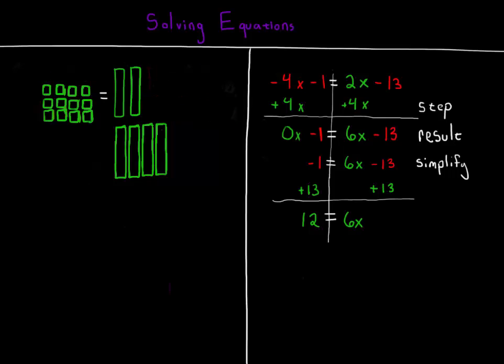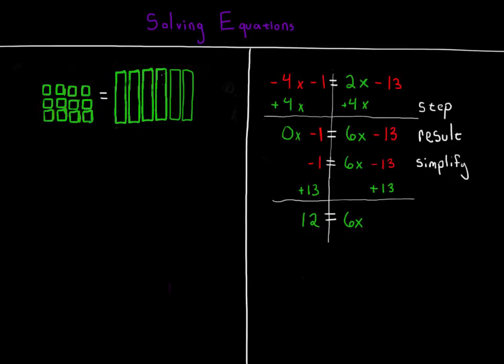The last step is to pair off the bars on the right with the units on the left. I've redrawn my model to make this a little easier to see. With 12 units on the left and 6 bars on the right, you can pair off 1 bar with every 2 units. 1 bar, 2 units. 1 bar, 2 units. And so on, until each bar and unit is accounted for.